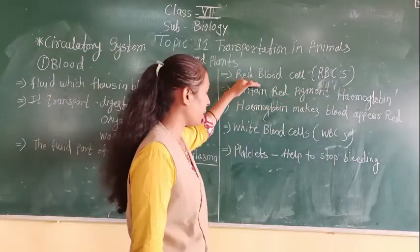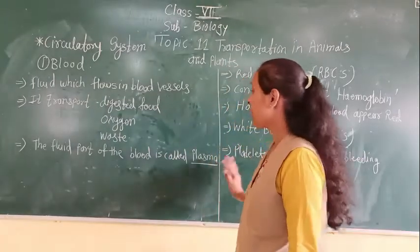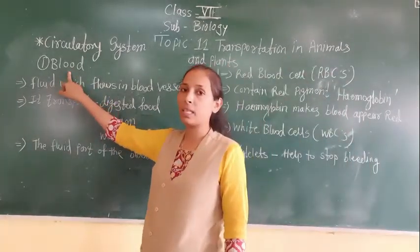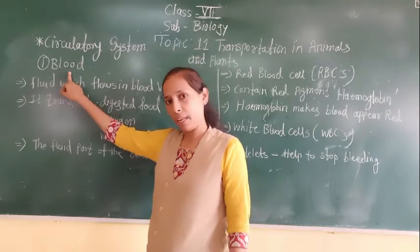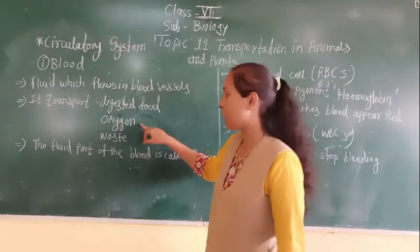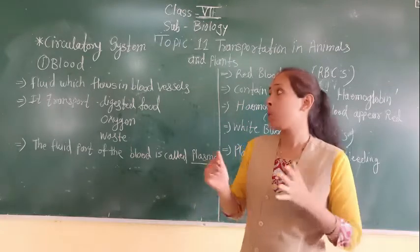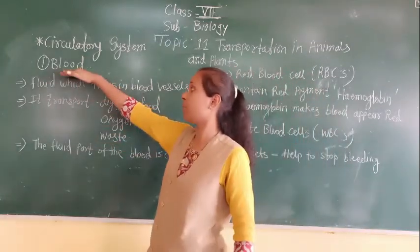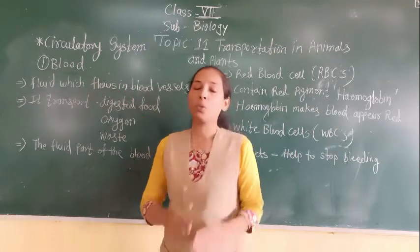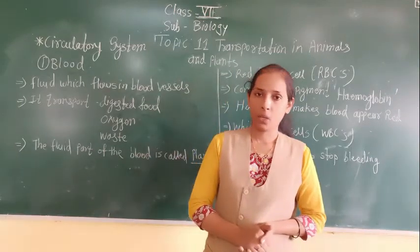So all these — red blood cells, white blood cells, and platelets — together with plasma form blood. With the help of blood, the body can transfer digested food, oxygen, and waste to the different body parts. Today we have discussed the first part of the circulatory system, which is blood. We will meet in the next video with the next point. Thank you.